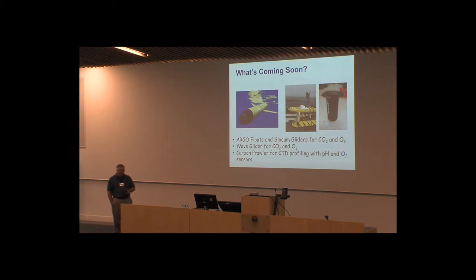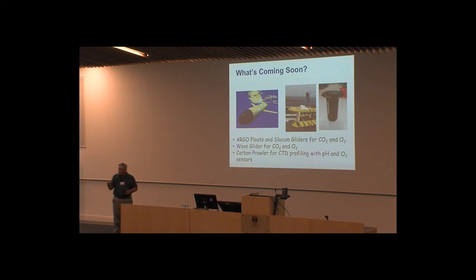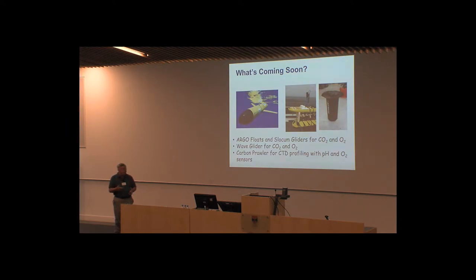New approaches being added to the observing system include Slocum gliders that can profile through the water column measuring pH, temperature, salinity, and oxygen for high-resolution spatial data. Wave gliders that move along the surface can replace ships, provide highly resolved maps, and run for several months. A 'carbon prowler' is also being developed — it goes up and down a mooring line measuring temperature, salinity, oxygen, and pH. All these new developments will bring high-resolution data into the observing system.